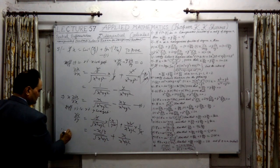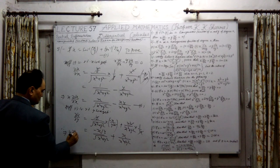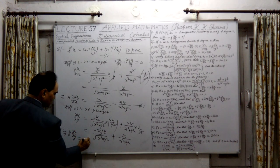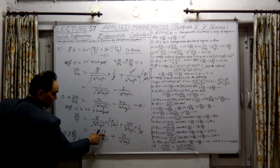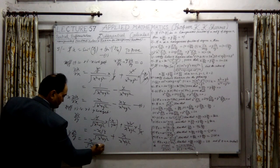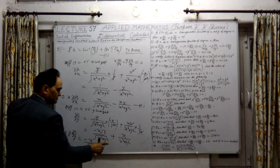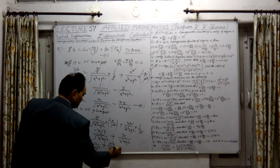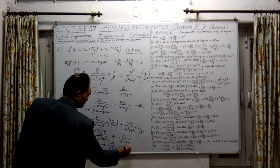Therefore, this implies that y into del u by del y is equal to minus x upon under root x square plus y square, plus x into y divided by x square plus y square. This is your third equation.